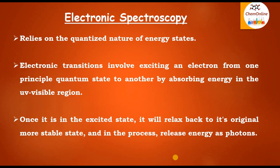We know that molecules have many types of energy like rotational energy, vibrational energy, electronic energy, nuclear energy, etc. All these energy levels are quantized and the transitions taking place among the energy levels in the presence of electromagnetic radiation lead to various spectra. In electronic spectroscopy, electronic transitions involve exciting an electron from one energy state or quantum state to another by absorbing energy in the UV-visible region, and obviously these energy levels are quantized.